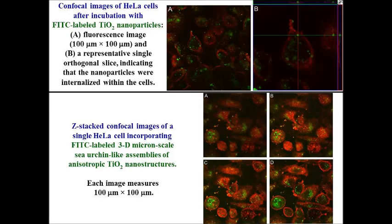What I've shown for TiO2 is that morphology does make a difference, but more importantly, whether you irradiate with UV light determines toxicity. The second example I want to highlight is zinc oxide nanostructures.